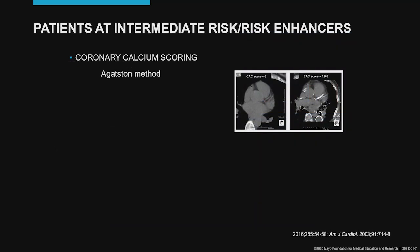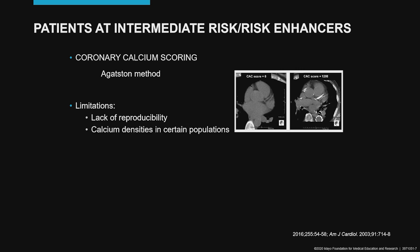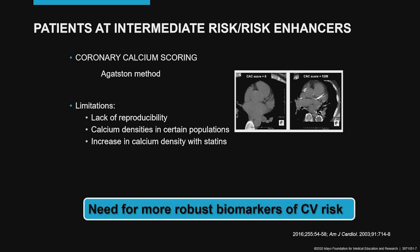Patients at intermediate risk, or patients that present with risk enhancers, need to be further risk stratified. We do that by using several measures, of which the most common one is the coronary calcium scoring. The most widespread method is the Agatston method. However, this method is not without limitations — there are limitations regarding reproducibility, certain calcium densities in certain populations, and we know that once we start the patient on statins, we expectedly increase in calcium density, again underscoring the need for more robust biomarkers of cardiovascular risk.